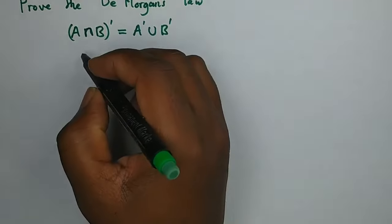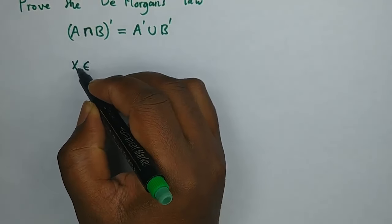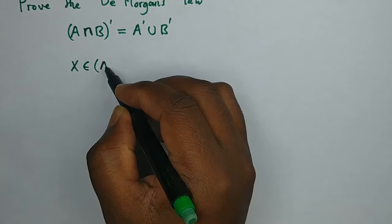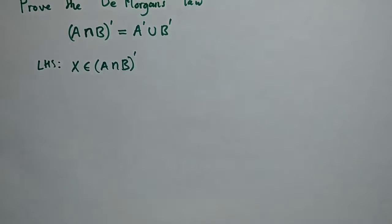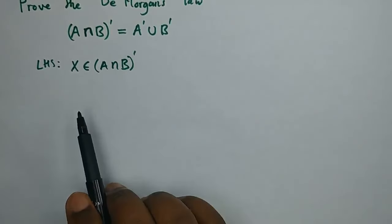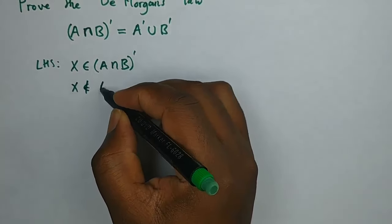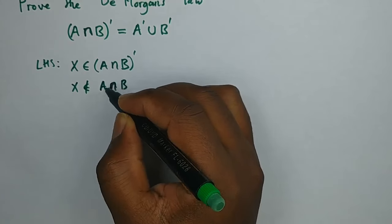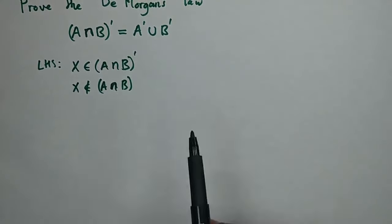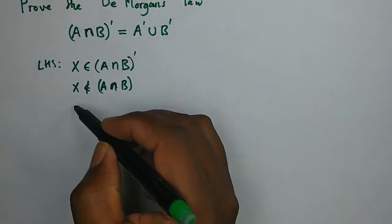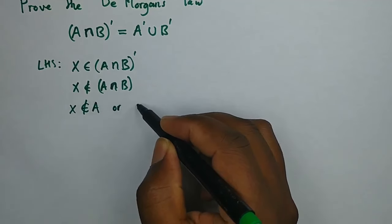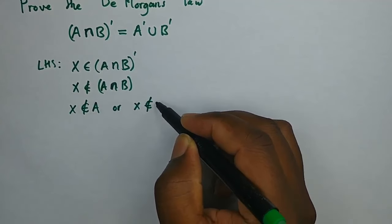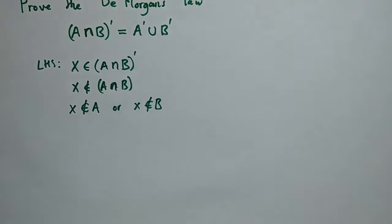On the left hand side, let's assume we have any element x which is a member of (A∩B)'. This is the left hand side. If x is a member of this complement, then we know that x is not a member of A∪B. Since what we want to come up with is a union, we can say x is not a member of A, or x is not a member of B.